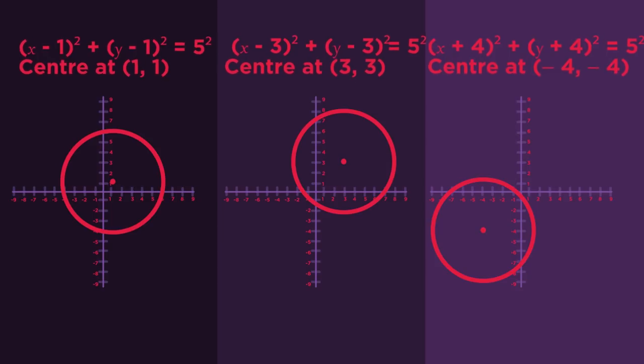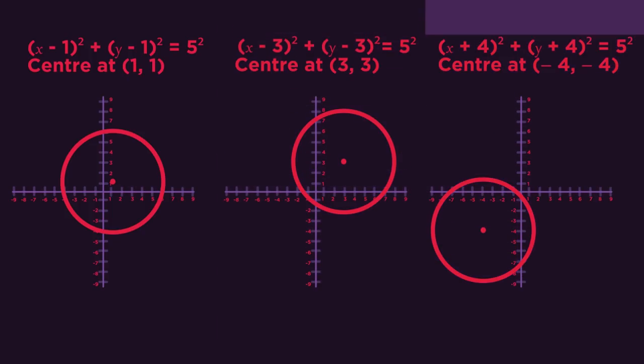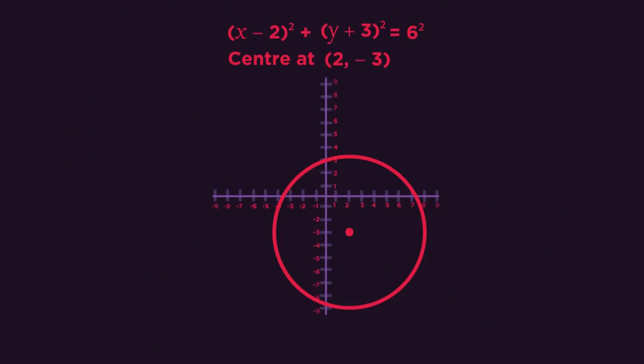Have a look at these three circles. I'm sure you all spotted that the coordinates of the center point go in the brackets with the x and y, remembering to change the sign. The x-coordinate goes in the bracket with the x, and the y-coordinate goes in the bracket with the y.